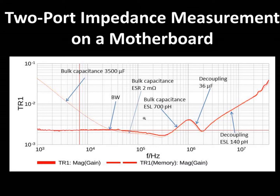Measuring inductance values below 140 pH requires extreme care in the attachment of the cables to the DUT, because coupling between the unshielded portions of the two coax cables can appear as an inductance.